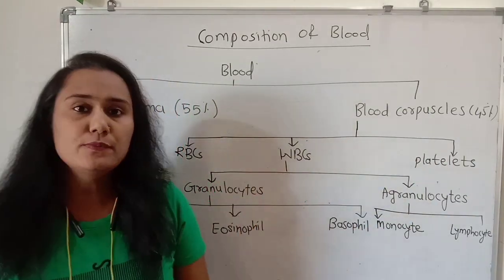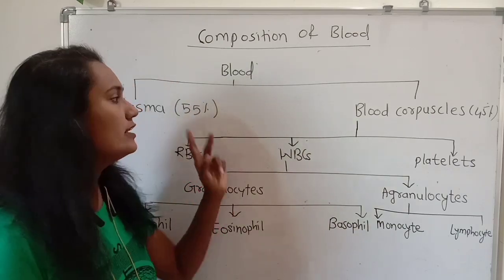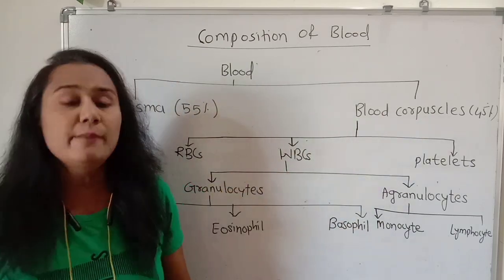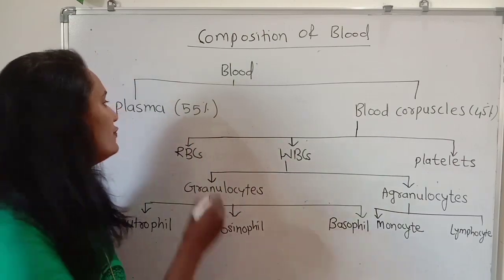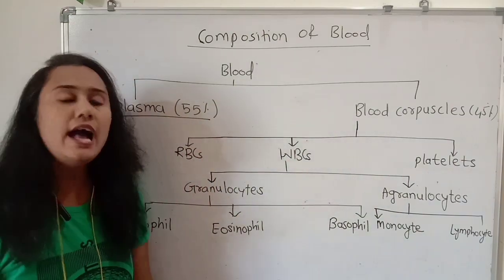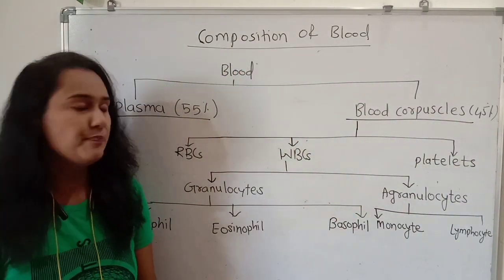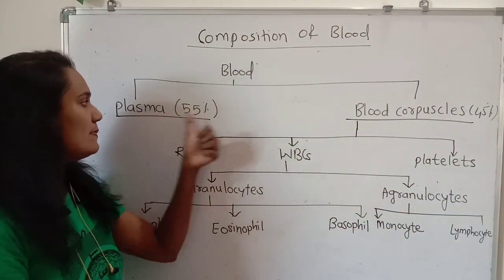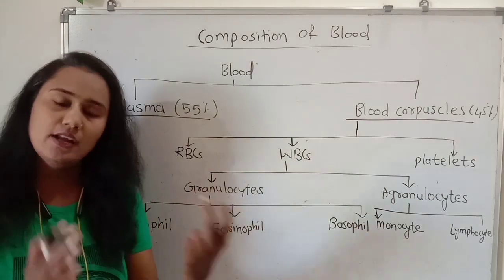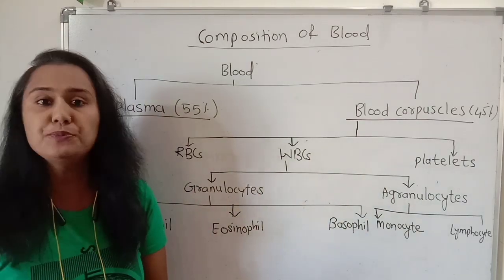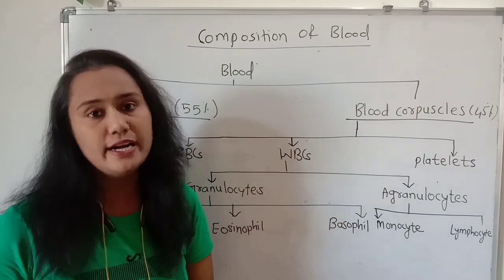Agar blood ke composition ke baat karte hai, toh blood ke andar dho component majorly hote hai. Blood is divided into two components: first is the plasma and another is the blood corpuscles. Plasma is about 55 percent, which contains 90 to 92 percent of water.